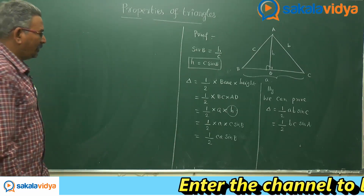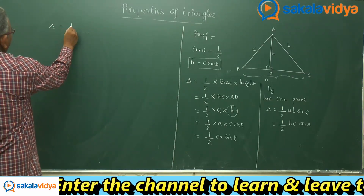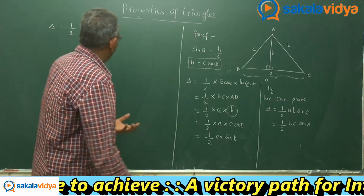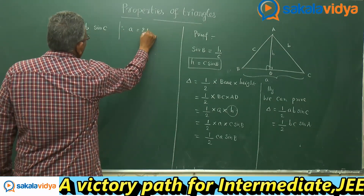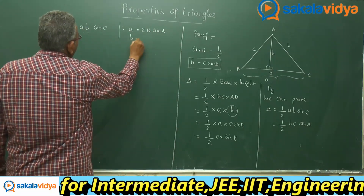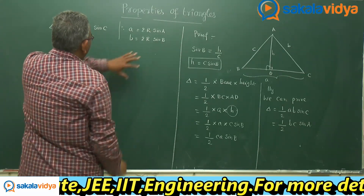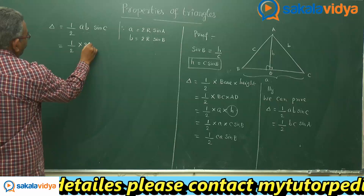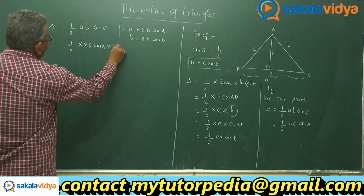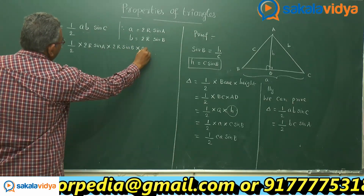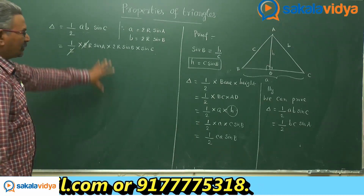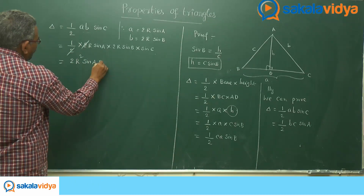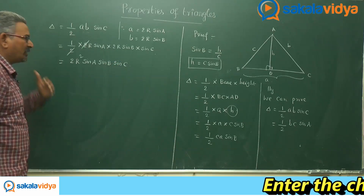Further deductions can be formed from the area of the triangle delta. We know delta = ½ab·sin C. Recalling the sine rule, a = 2R·sin A and b = 2R·sin B. Replacing a by 2R·sin A and b by 2R·sin B: delta = ½ × 2R·sin A × 2R·sin B × sin C. Simplifying, delta = 2R²·sin A·sin B·sin C. This is also one of the formulas for delta.